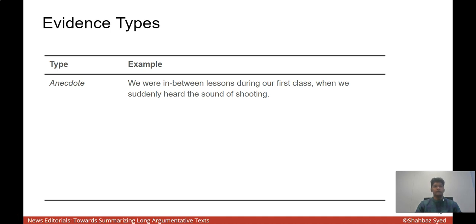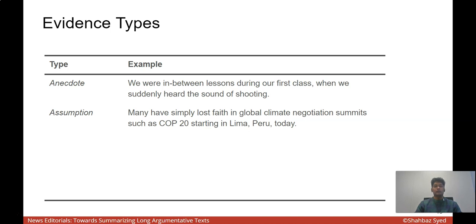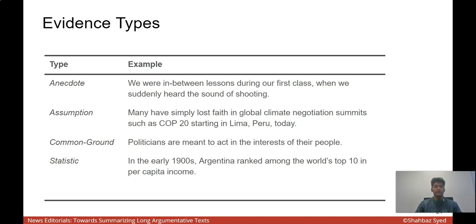The first type is an anecdote which provides evidence by stating the first-hand experience of the author. The second is assumption, which is mostly an opinion or judgment provided by the author, which must be supported by other evidence in order to be accepted by readers. Then we have common ground, which is a self-evident fact, which is accepted by most people without much evidence. Then we have statistics, which are results of qualitative studies and quantitative studies performed by institutions. Then we have testimony, which is an external proposition made by an expert or a witness. So one could see how intricate an editorial is and how different units provide evidence in different forms.